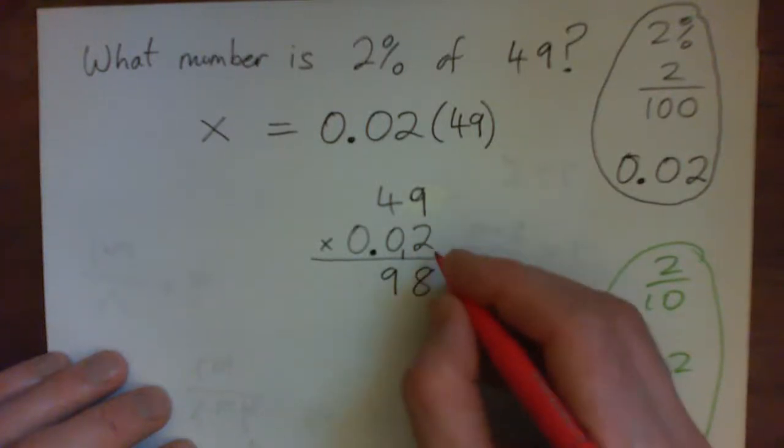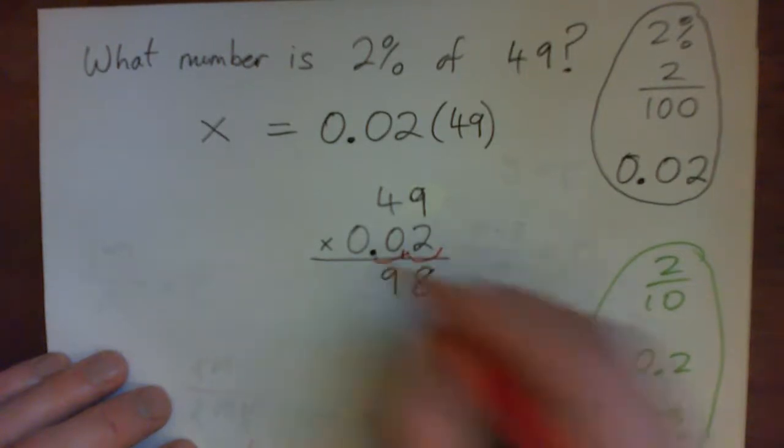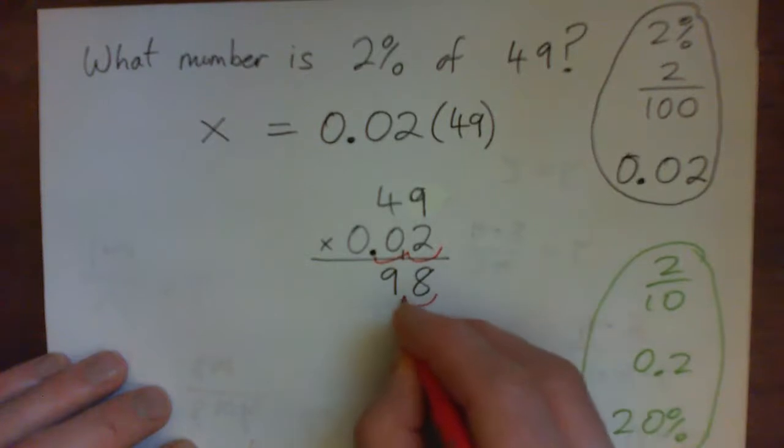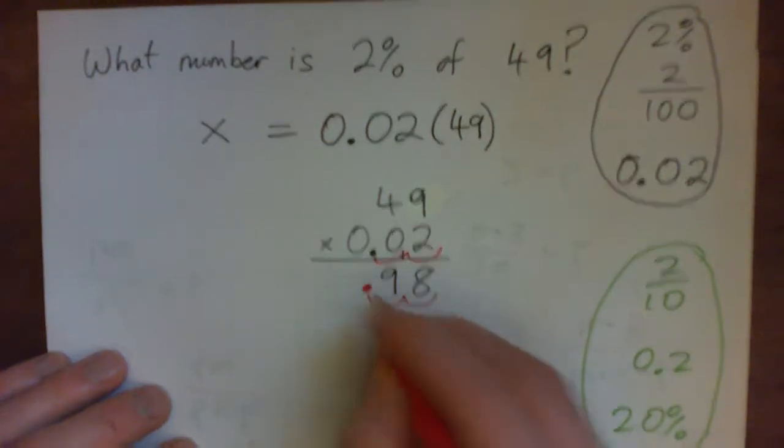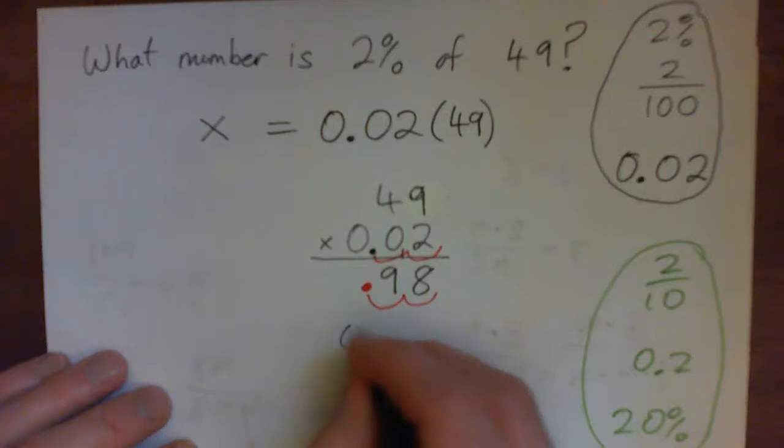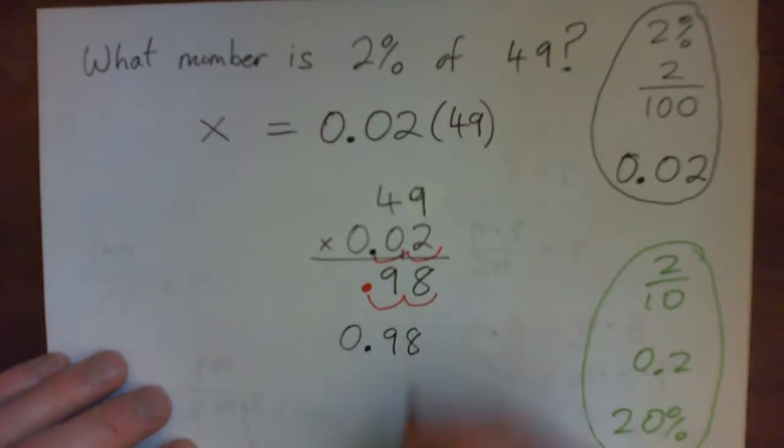Now, how many decimal points do we need? Well, there's one, two decimal points in the question, so there must be one, two in the answer. So it's 0.98 or 0.98.